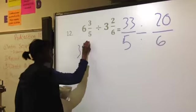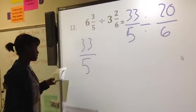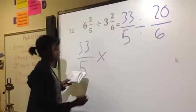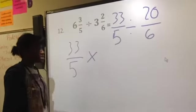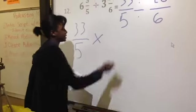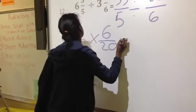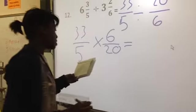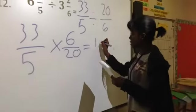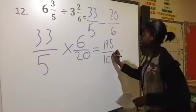The next step is to bring down the problem. So 3, 3 over 5, but this time, we're supposed to times. So times... And do you remember what that's called when we're going to flip this number? The reciprocal. Perfect. So it's 6 over 20. And then that equals 2, 1, 3, 8 over 100.